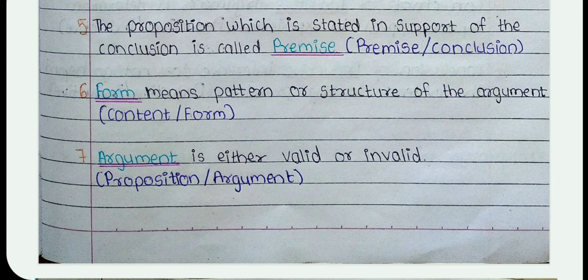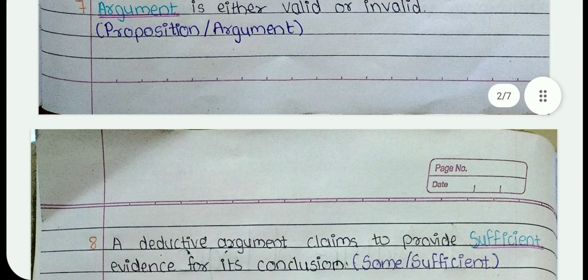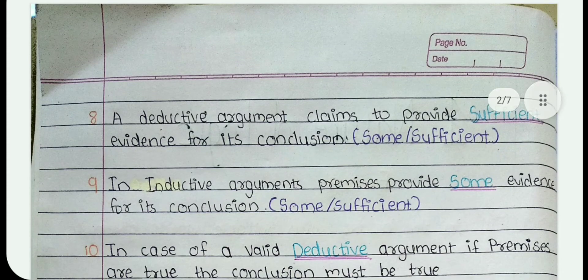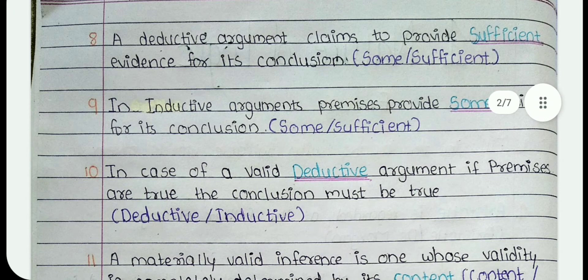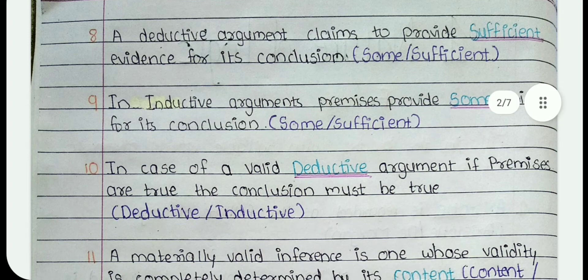7. Dash is either valid or invalid. The answer is Argument. 8. A deductive argument claims to provide Dash evidence for its conclusion. The answer is Sufficient. 9. In inductive arguments, premises provide Dash evidence for its conclusion. The answer is Some.